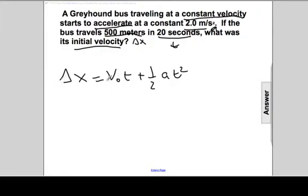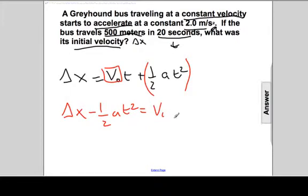None of these will be zero because we start off at some nonzero initial speed. So what we'll do is isolate this and solve for v naught. The first thing we need to do is subtract this entire term. So delta x minus one-half a t squared will be equal to v naught times t.